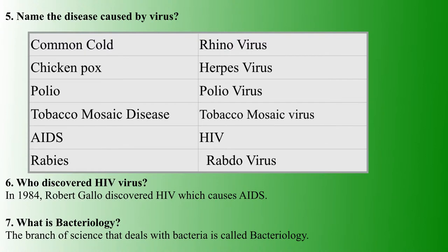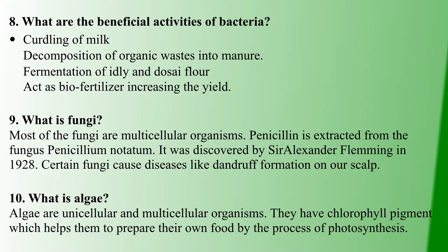Next question: who discovered HIV virus? HIV virus was discovered in 1984 by Robert Gallo. The branch of science which deals with bacteria is called bacteriology.